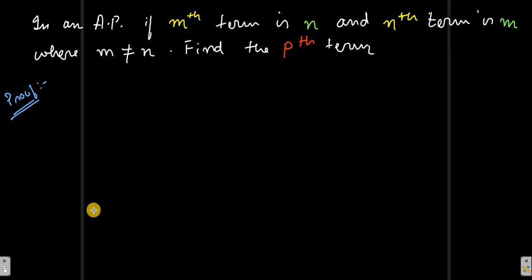In this video I want to prove a theorem: in an AP, if the mth term is n and the nth term is m, where m is not equal to n, we have to find the pth term. So what exactly do we have to prove?